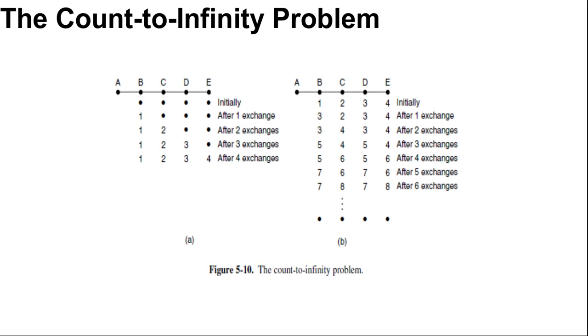Now let's consider the situation for figure B in which all the links and routers are initially up and router B, C, D, E have distances to A of 1, 2, 3 and 4 hops respectively. And suddenly, either A goes down or the link between A and B is cut. There is the problem. At the first packet exchange, B does not hear anything from A. And C says, do not worry, I have a path to A of length 2. Little does B suspect that C's path runs through B itself. For all B knows, C might have 10 links, all with separate path to A of length 2. As a result, B thinks it can reach A via C with path length of 3. And D and E do not update their entries for A on the first exchange.